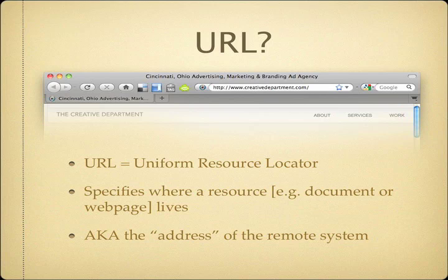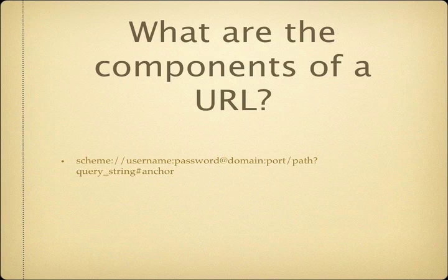That last point is really important — it's a remote system, not necessarily a web page. A URL is just an address to something out in the tubes; it doesn't have to be a website. So let's break down the true components of the URL. The format of every URL has: Scheme, User Password, Domain, Port, Path, Query String, and Anchor. When you type in www.creativedepartment.com, a lot of these values are actually inferred or hidden from you because the browser does a lot of work for you.